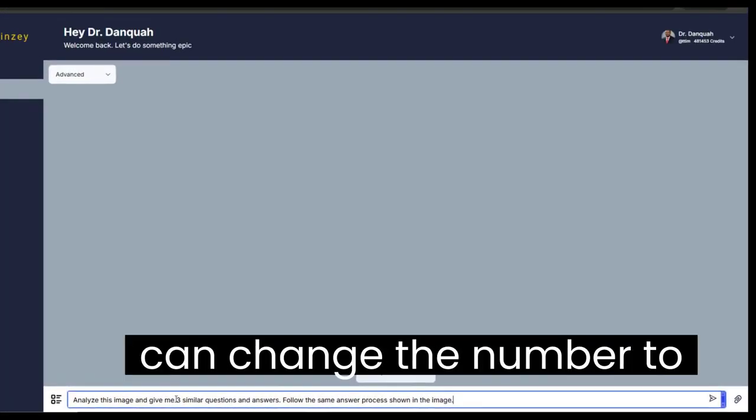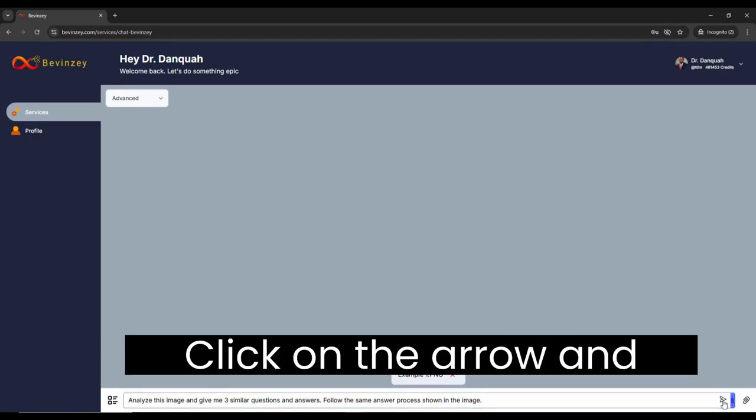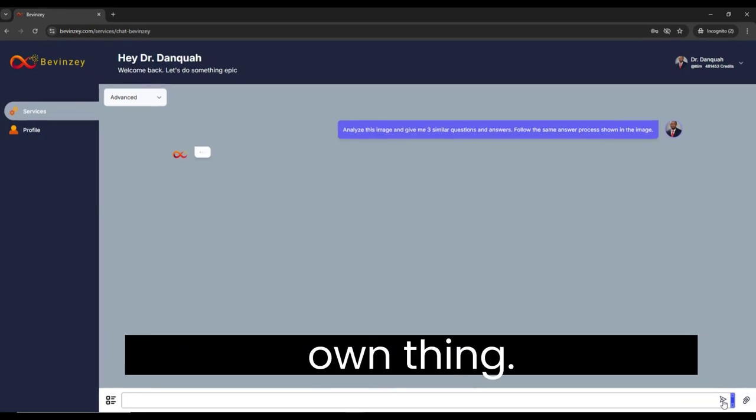Enter this prompt and you can change the number to whatever number of questions you want to create. Here we're creating three. Click on the arrow and allow bvinci to do its thing. And there you have it.